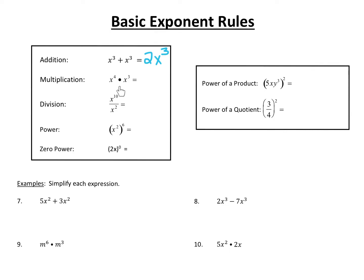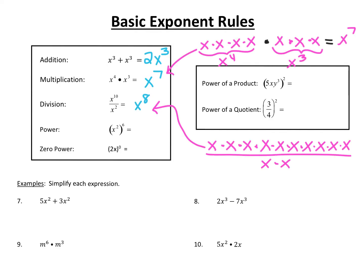When you're multiplying two terms with the same base, you multiply the numbers in front and you add the exponents. x to the 4th times x to the 3rd is x to the 7th. That's when the exponents change — when you're multiplying, you add the exponents. You can see why: x to the 4th means 4 x's being multiplied together, times x to the 3rd means 3 more, so altogether we have 7 of them — that's x to the 7th. That's why we add the exponents when multiplying.